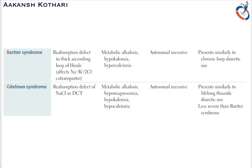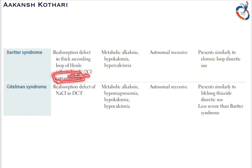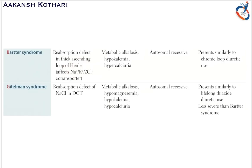Now let us talk about Bartter syndrome. In Bartter syndrome, there is a reabsorption defect in the thick ascending loop of Henle, whereas in Fanconi syndrome it was the proximal convoluted tubule. In the thick ascending loop of Henle, there is a sodium-potassium-two chloride ion co-transporter which pulls these three ions into the interstitium. Due to the reabsorption defect in the thick ascending loop, a lot of sodium, potassium, and chloride are not reabsorbed and are excreted in the urine.